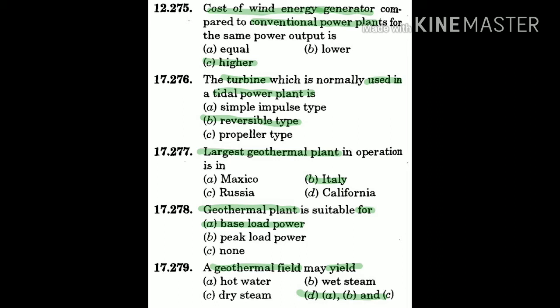Question 279: A geothermal field may yield — the answer is D (all of A, B, and C): A) hot water, B) wet steam, C) dry steam. All three outputs are possible from a geothermal field.